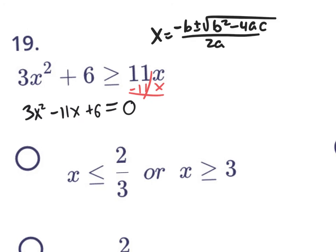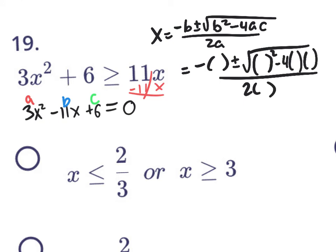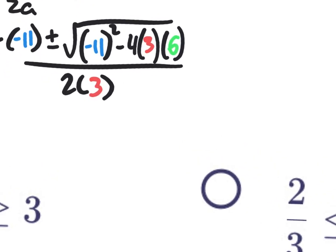X equals negative B plus or minus the square root of B squared minus 4AC, all divided by 2A. Whenever you use the quadratic formula, identify your A value, B value, and C value, and then rewrite the formula with parentheses. Our B value is negative 11, our A value is 3, and our C value is 6. Working on the discriminant: 11 squared is 121, minus 4 times 3 which is 12, times 6 which is 72. So we have 121 minus 72 inside the square root.